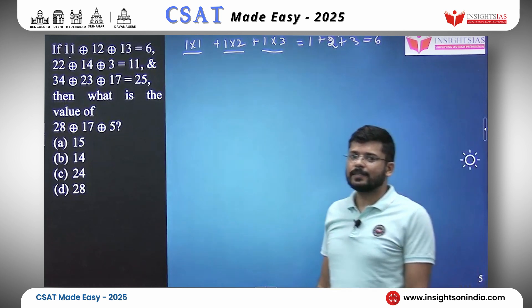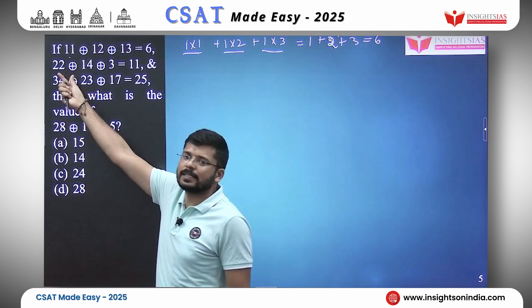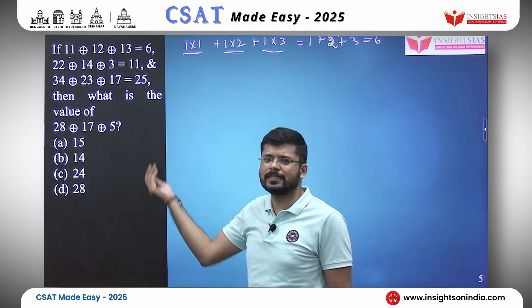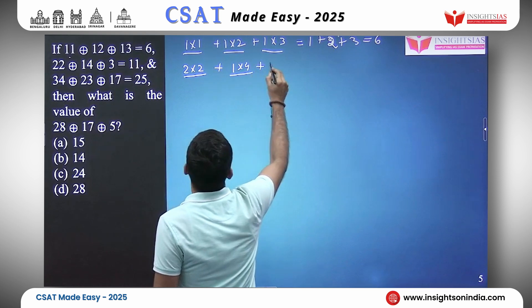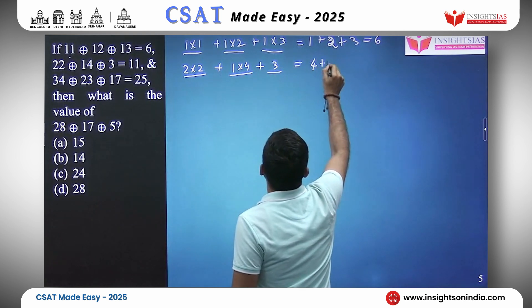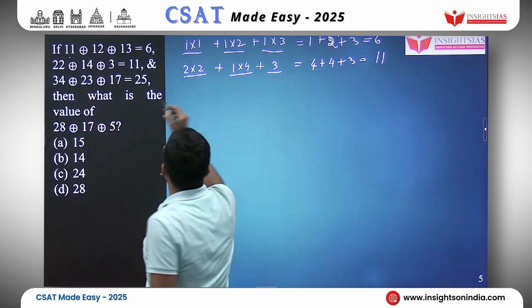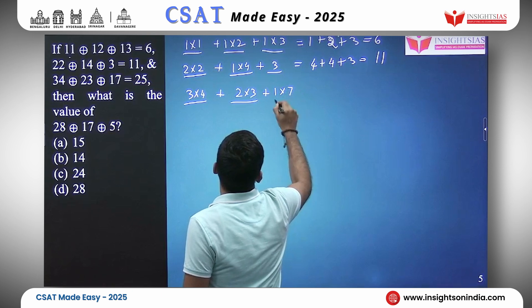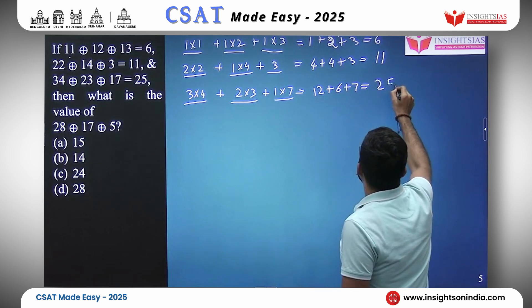What I am checking is the product of the digits of each number, then adding them — just doing trial-and-error. For the second case: 2 into 2 plus 1 into 4 plus 3 equals 4 plus 4 plus 3 equals 11. Yes! For the third: 3 into 4 plus 2 into 3 plus 1 into 7 equals 12 plus 6 plus 7 equals 25. Yes, we got it.